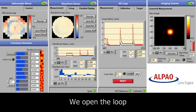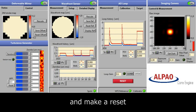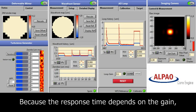Now we open the loop and reset the perturbation. Because the response time of the loop depends on the gain, increasing its value also corresponds to a decrease in stabilization time of the mirror.